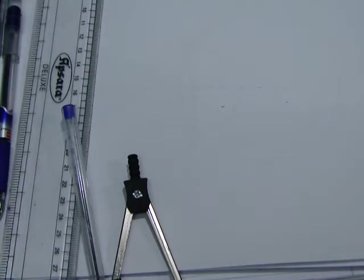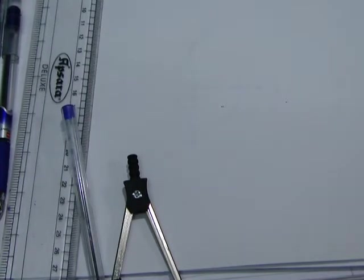Today we will do the first question of exercise 10.4, which says that two circles of radius 5 cm and 3 cm intersect at two points and the distance between their centers is 4 cm. Find the length of the common chord.